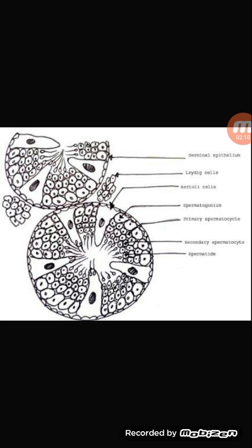To quickly repeat: the TS of testes shows 1 to 4 convoluted seminiferous tubules per lobule, and the testes has around 200 to 300 lobules. Each seminiferous tubule is lined by cuboidal germinal epithelium. In between this epithelium, at specific intervals, there are elongated cells called nurse cells or Sertoli cells. The Sertoli cells help to nourish the growing sperm, and the sperms are inserted with their heads inside the Sertoli cells.